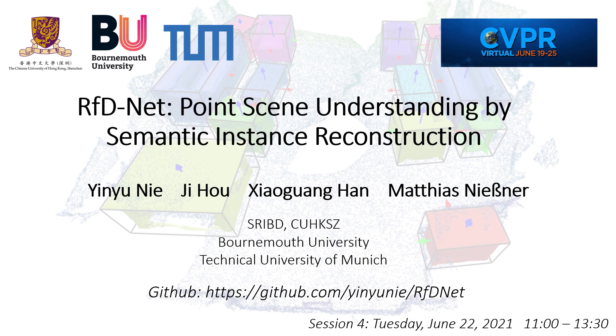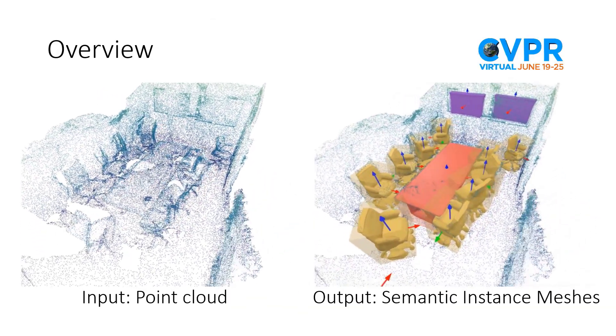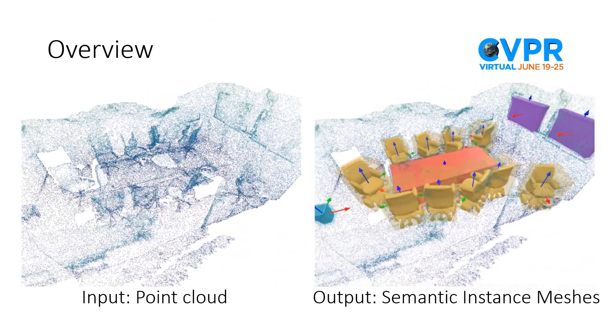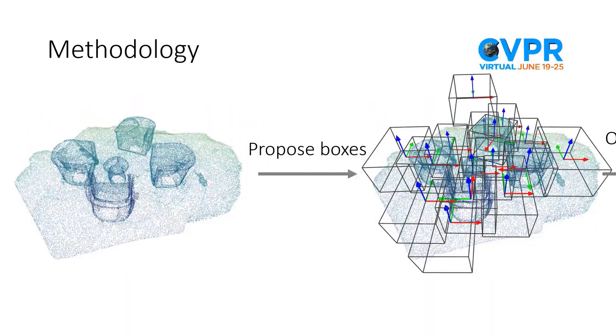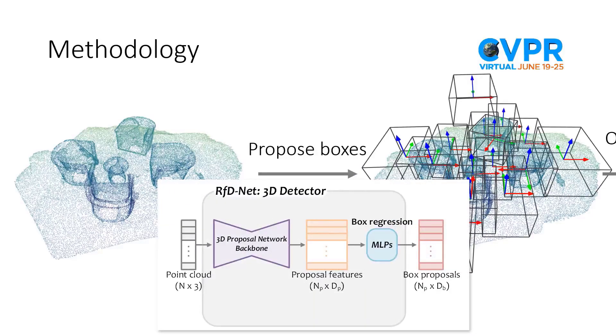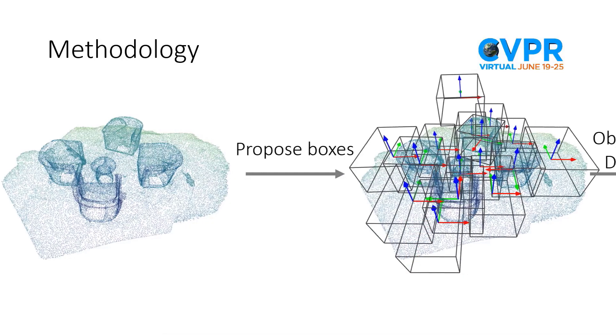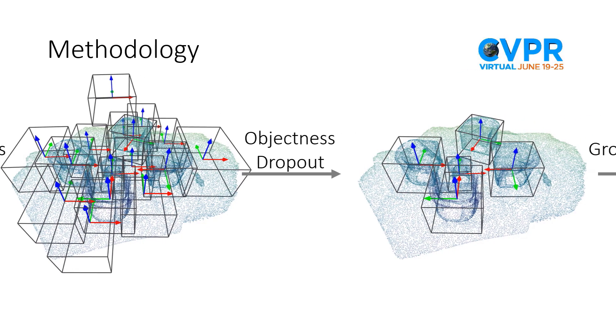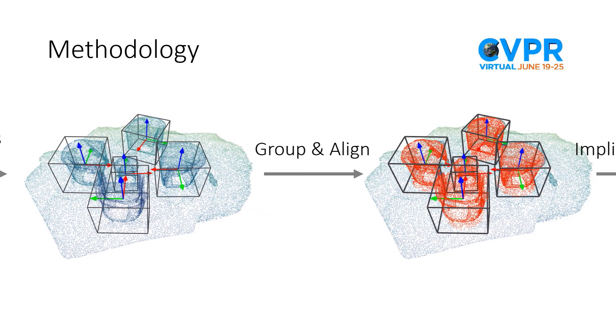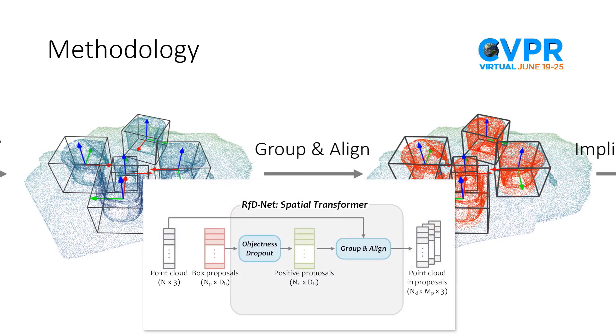We present RFDNet, Point Scene Understanding by Semantic Instance Reconstruction. Given a sparse point cloud scan of an indoor scene, our method jointly detects and reconstructs object meshes at the instance level. From the input point cloud, our method firstly proposes 3D object bounding boxes to locate the potential objects. We only resolve these bounding boxes with higher objects from all the proposals, to ensure the shape generation from meaningful 3D points.